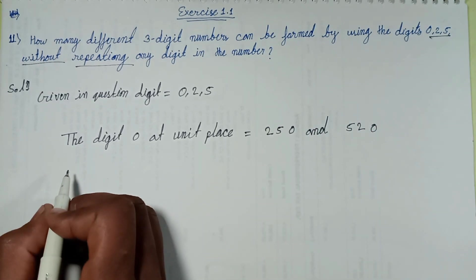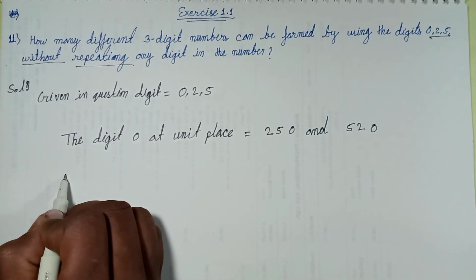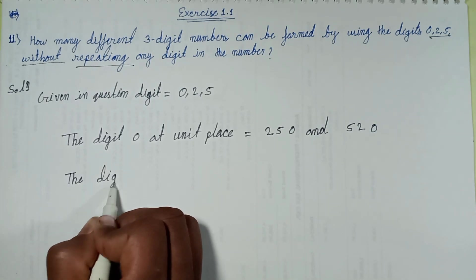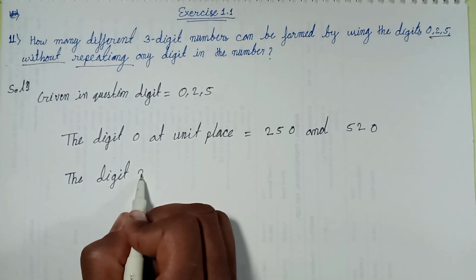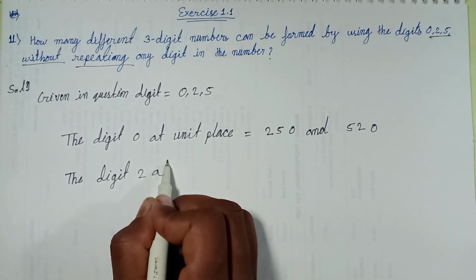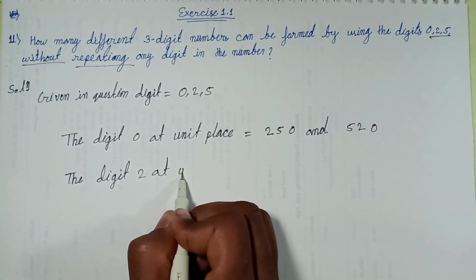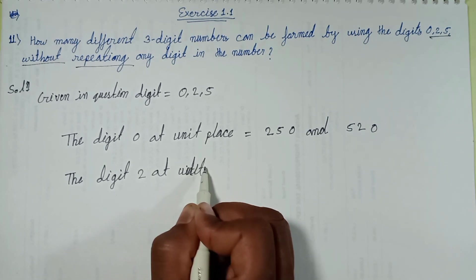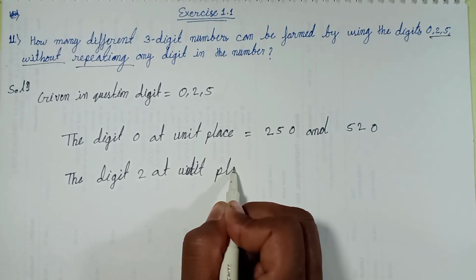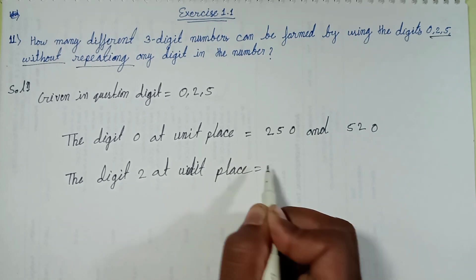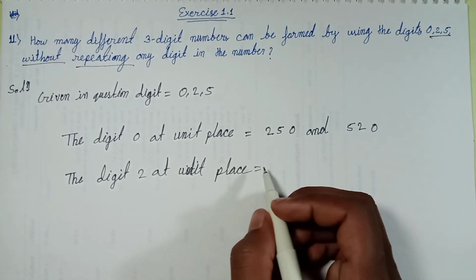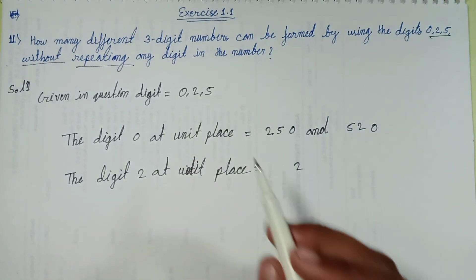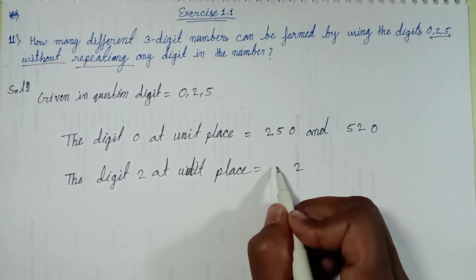Second. The digit 2 at units place. 2 at units place. 2 at units place.